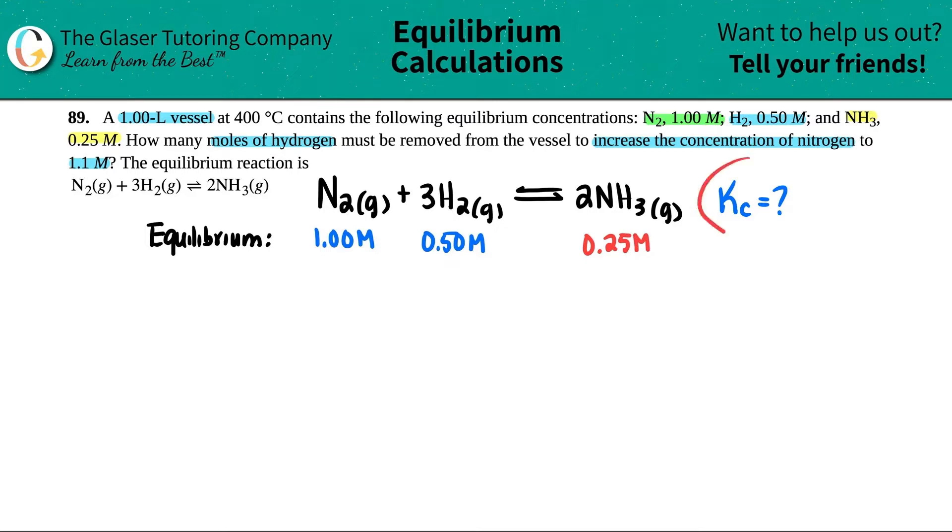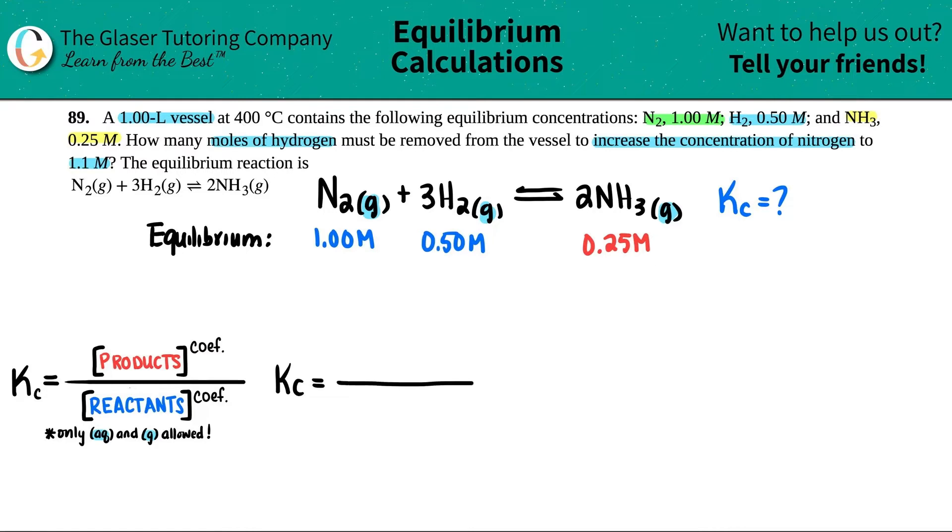So how do we find the Kc expression? It's the general formula. Kc equals concentration of products divided by concentration of reactants. They're all raised to the coefficients, and remember, only aqueous and gases are allowed in this equation. All of these are gases, so all of these are going to be taken into consideration. So let's just write out the Kc formula for this equation, products over reactants. We got one product, so the concentration of NH3, and that's going to be raised to its coefficient. There's a 2 here, so I got to raise it to the second.